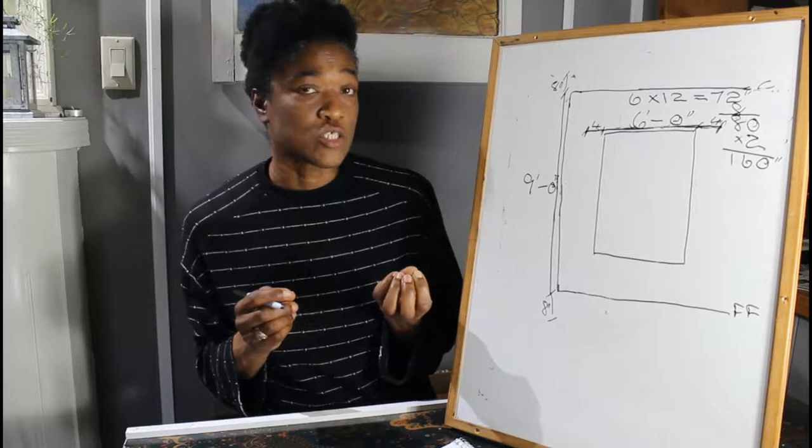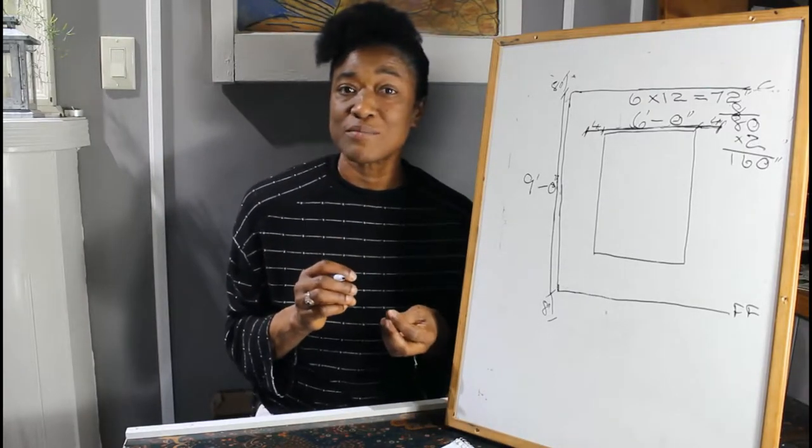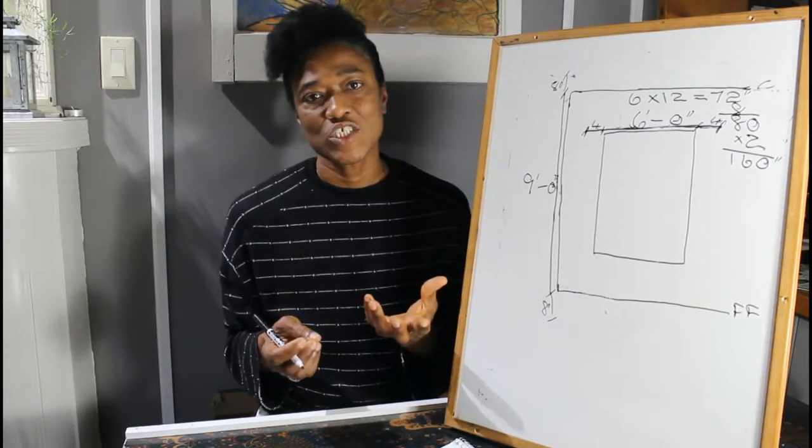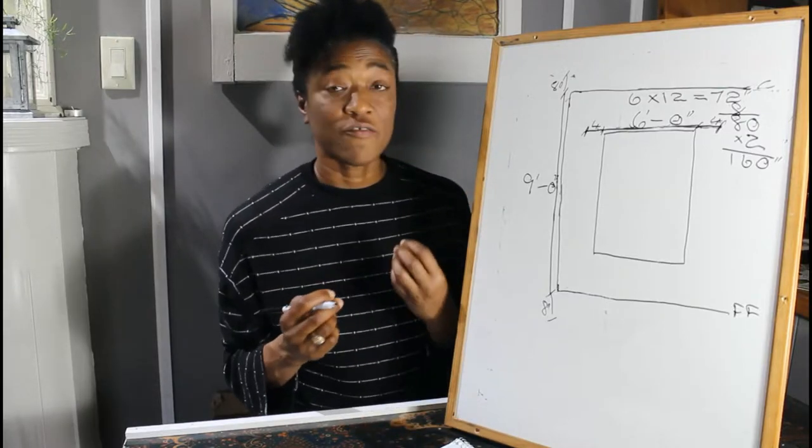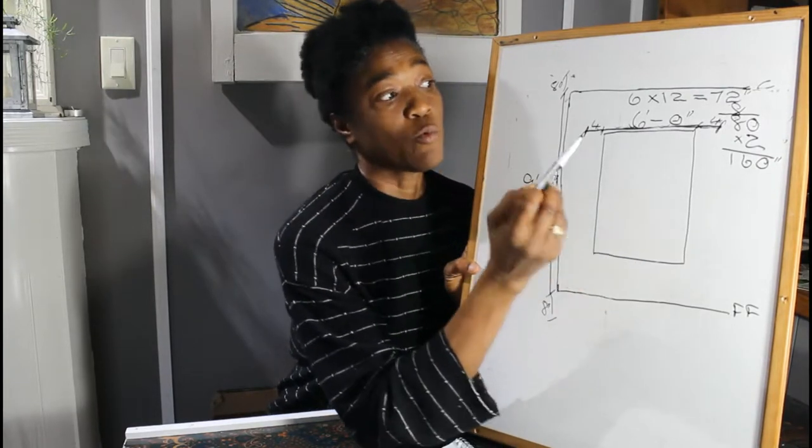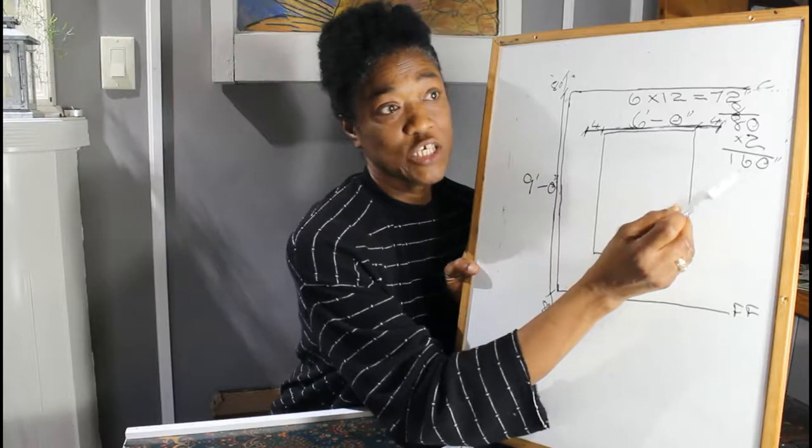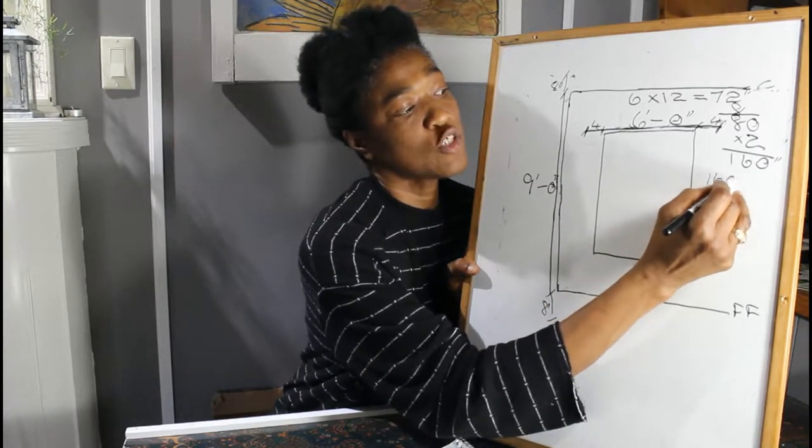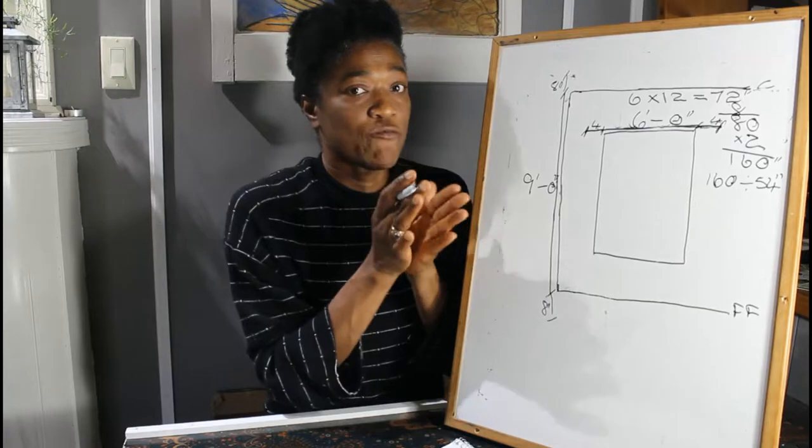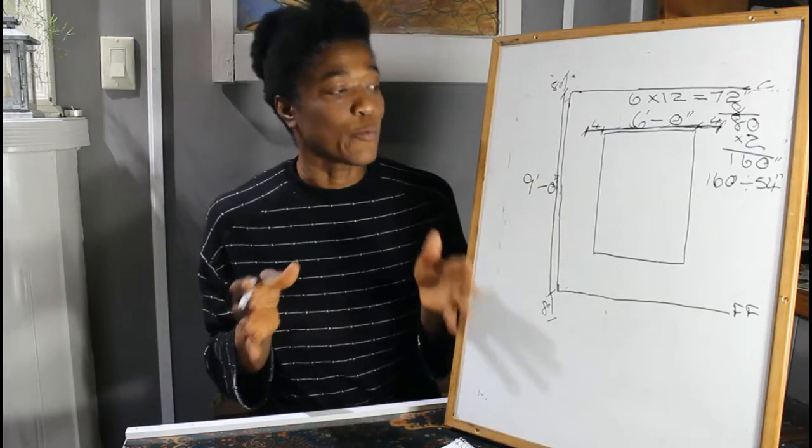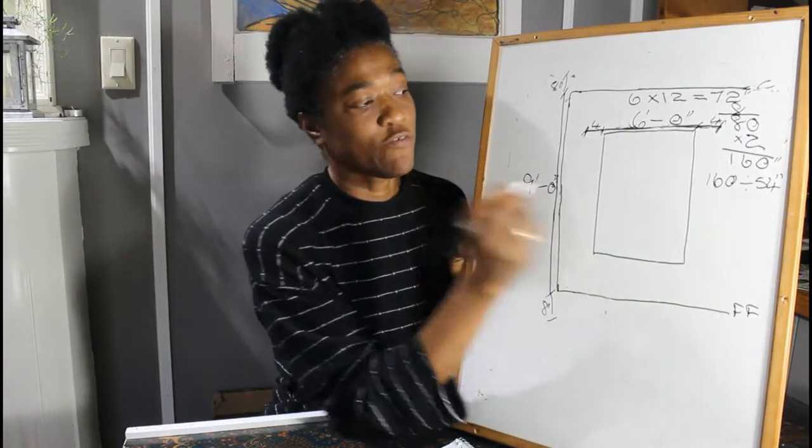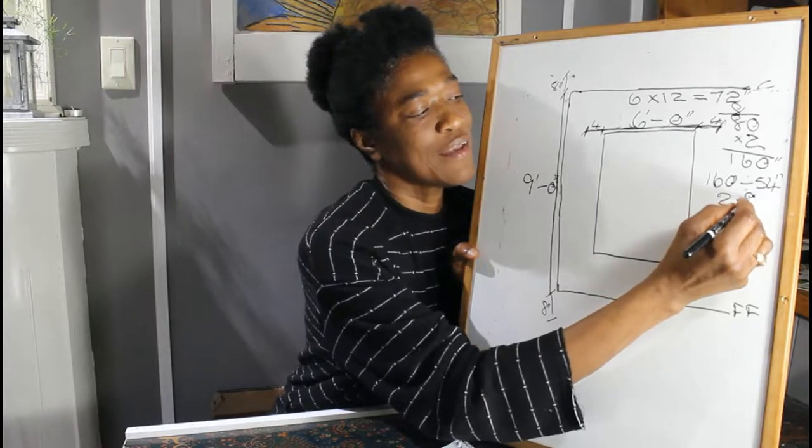Now, fabrics usually come in double width. Sometimes can be 120 inches or 54 inches, it can be 60 inches. For our purpose here, we will just use a piece of fabric that's 54 inches wide. We'll divide the 160 inches by 54 inches. 160 divided by 54, 54 being the width of our fabric. What we are heading for is the number of widths we'll need to cover our window.